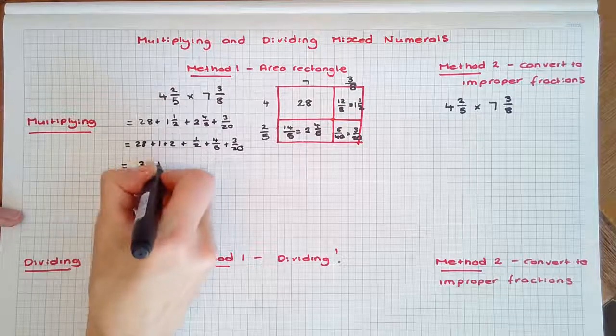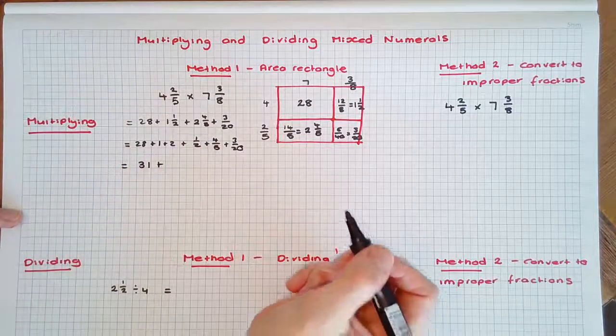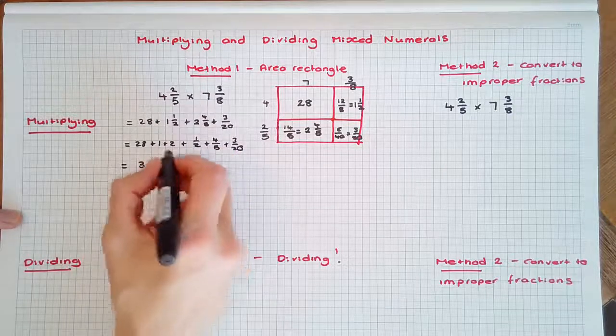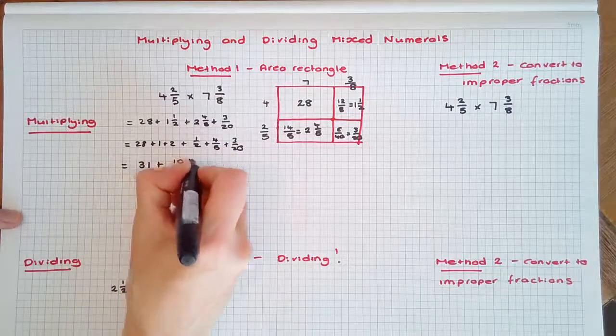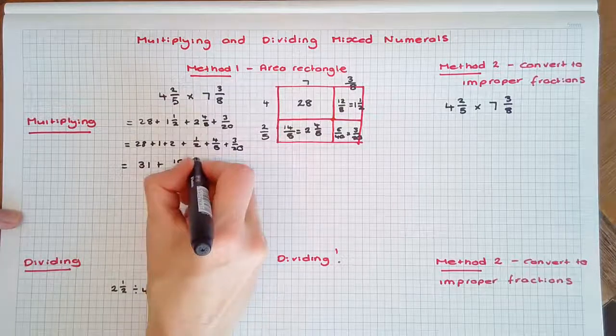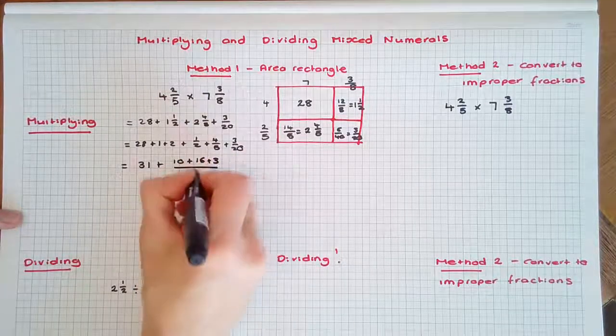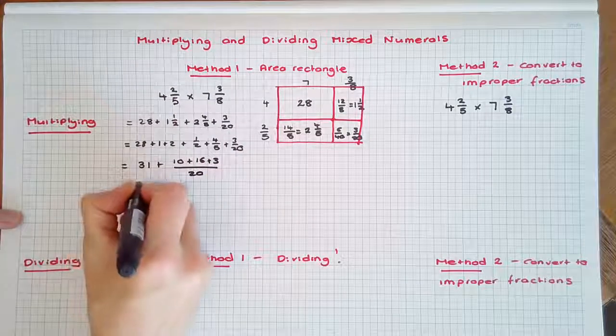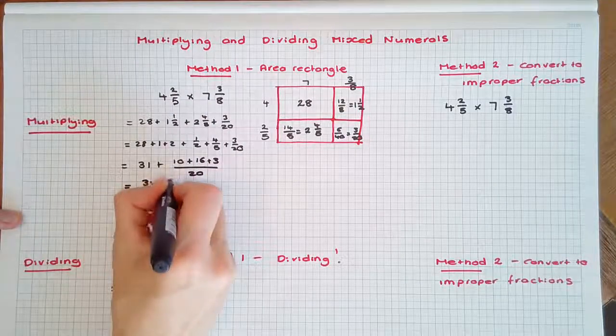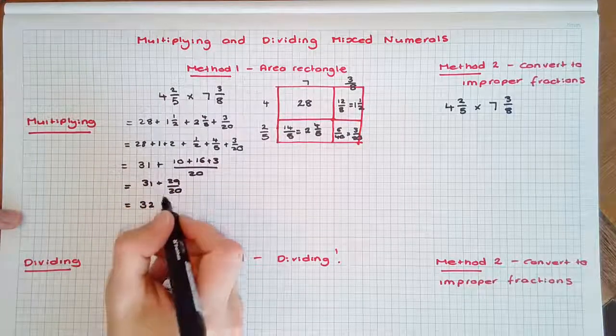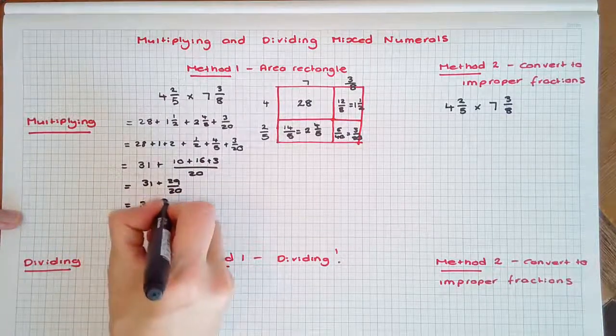We're left with 31 plus these fractions. The lowest common denominator is 20, so I'm going to convert 1/2 to 10/20, plus 4/5 to 16/20, and then we have the 3, all over 20. We're left with 31 plus 29/20, and then finishing it off, our final answer as a mixed numeral is 32 9/20.